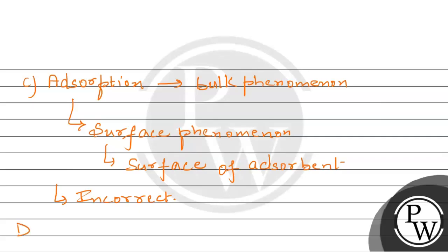Or option number D, jis mein bola gaya all of these are incorrect, to aisa nahi hai, kyunki A aur B to correct hai, aur C incorrect hai. That means, ye jo option hua, that is incorrect. So we can say, ke hamara jo option number C hai, that is an incorrect option.